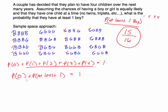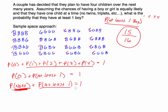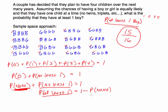This formula is incredibly helpful: the probability of none plus the probability of at least one equals one. What this tells us is that if we want to find the probability of at least one, we can find the probability of none and subtract it from one. So the probability of at least one equals one minus the probability of none. This is often much easier than adding up all the individual possibilities.